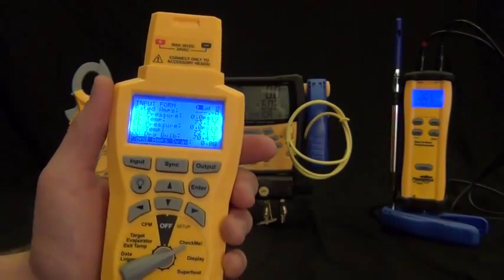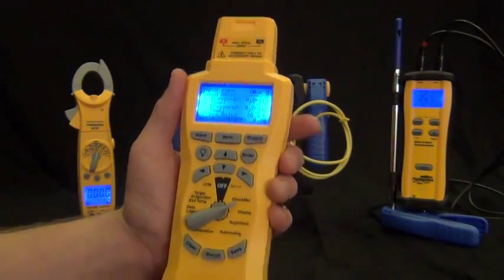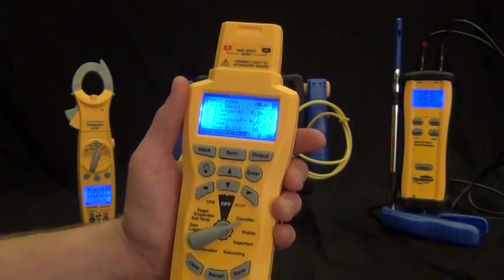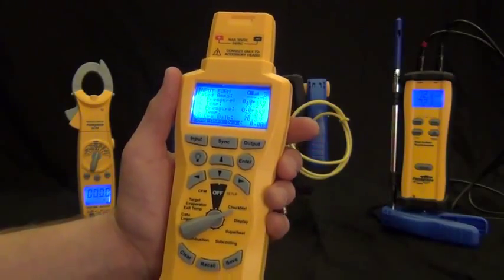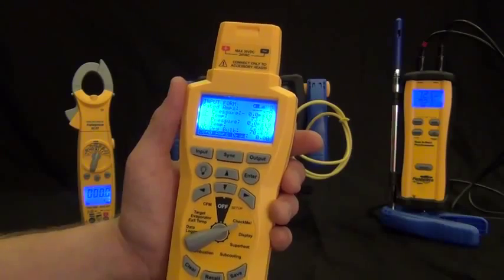Now once I have all the information in my HG3 and the products in the background actually hooked up to systems, I can press the output button and it will actually give me corrective actions to take on the system, such as low refrigerant charge, you need to add refrigerant or what have you.